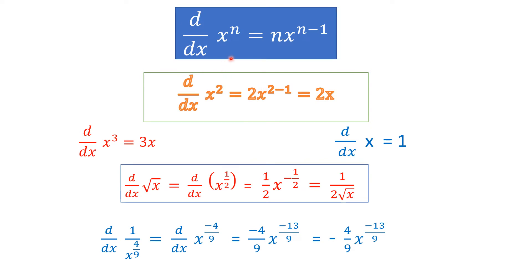The first formula states that the derivative of x^n is equal to n·x^(n−1). This is called the power rule. What you do is take n, the power, and bring it to the beginning. The original function x^n becomes x^(n−1), so the power gets reduced by 1.